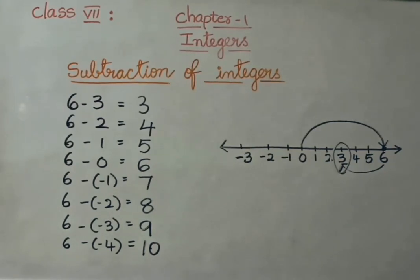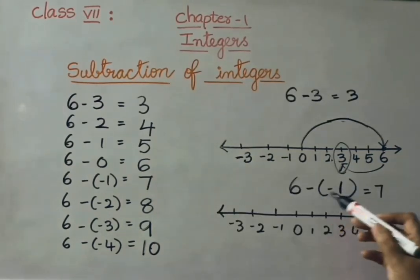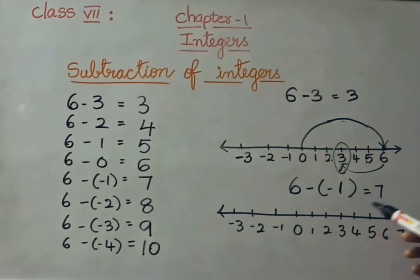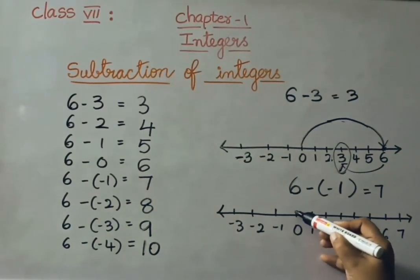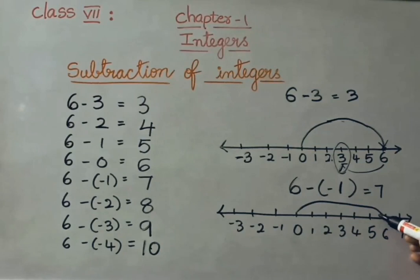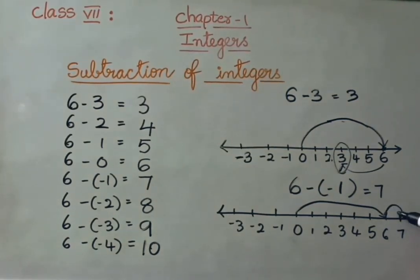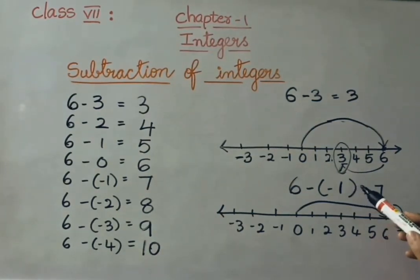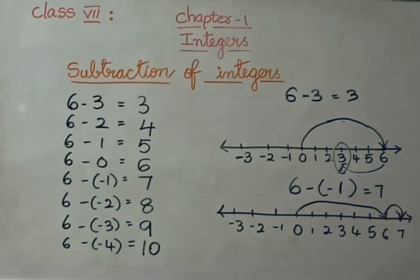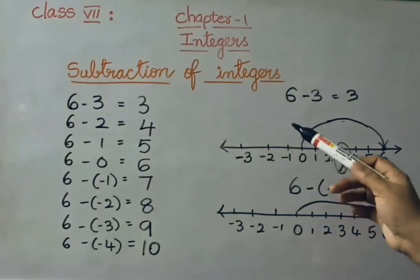Now let us see one more example. 6 minus of minus 1 — that means 6 plus 1, answer is 7. Now let us show this on the number line. So 0 onwards we show 6 first. Now minus of minus means plus. So 6 plus 1 — move 1 digit to the right. When we subtract a negative integer on the number line, we move right side. Each time when we subtract a positive integer, we move left side on the number line.